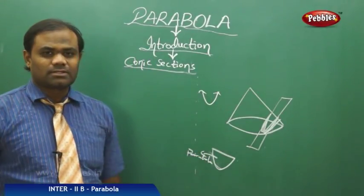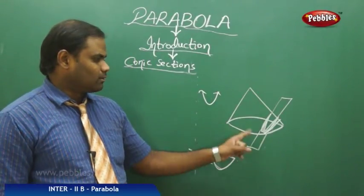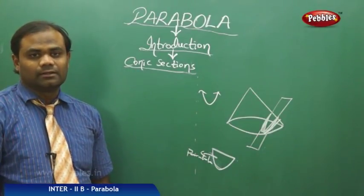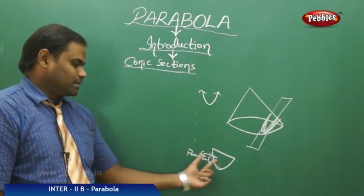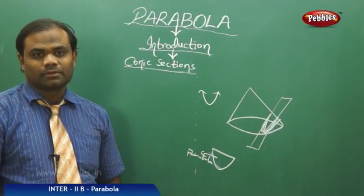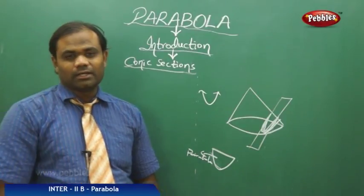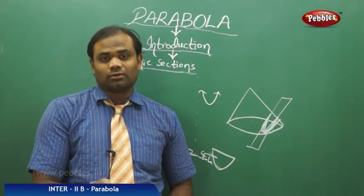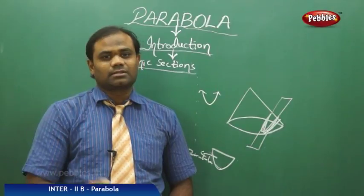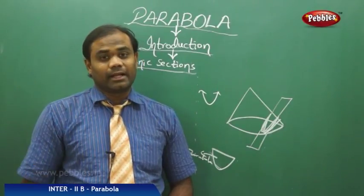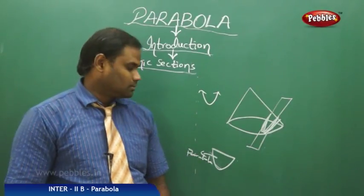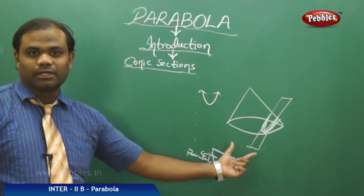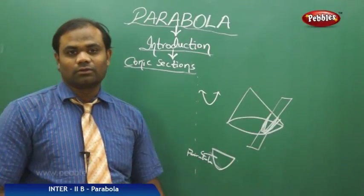When the cone is cut across an angle, I get the parabola. So the parabola is the conic section obtained when the cone is cut other than at 90 degrees to the base of the cone.